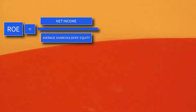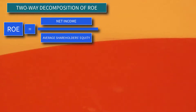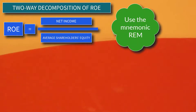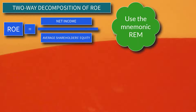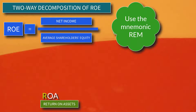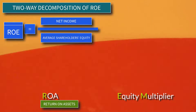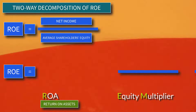ROE can be expressed in two components using the mnemonic REM. R is ROA or Return on Assets, while EM stands for Equity Multiplier. Therefore, we have two fractions or components.